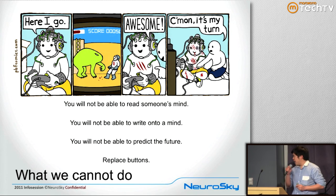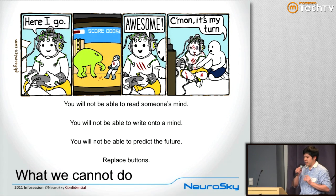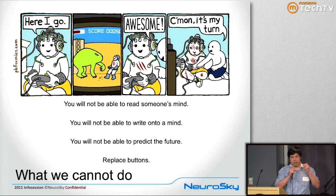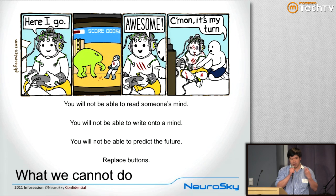What we can read are emotional states. What we understand about the mind through the last century of neuroscience has been that the mind works at these different levels of emotional states.